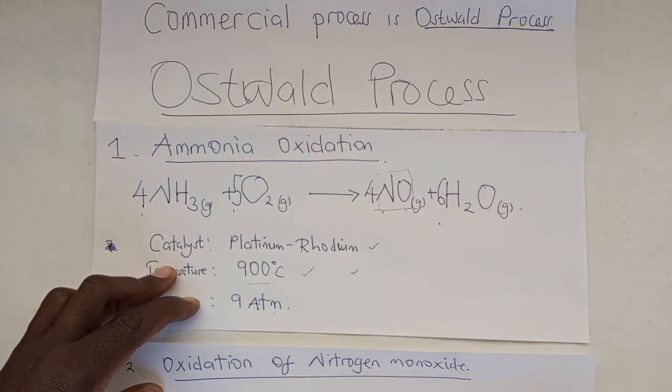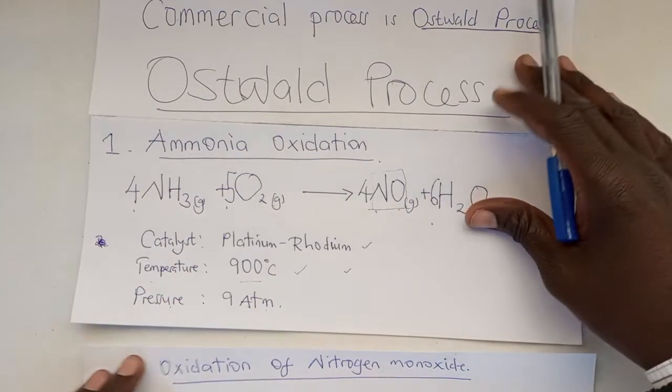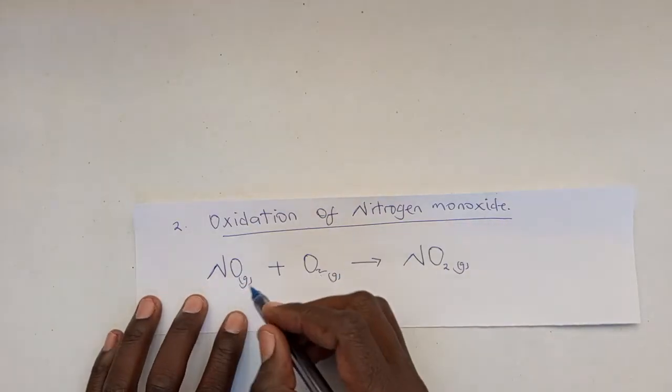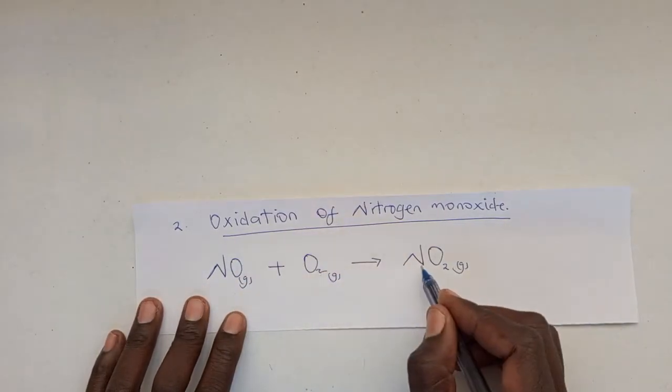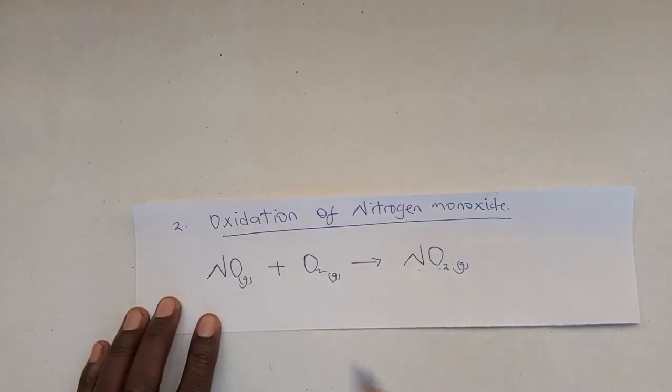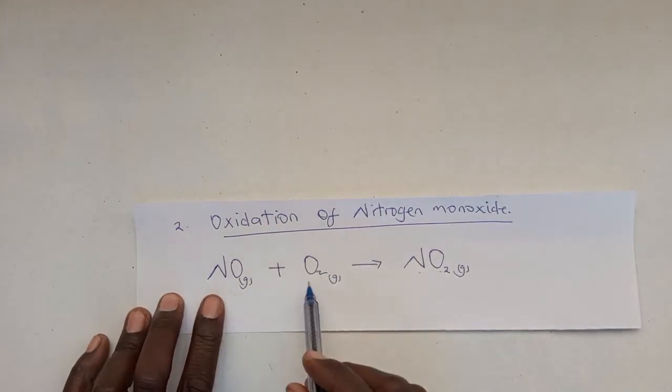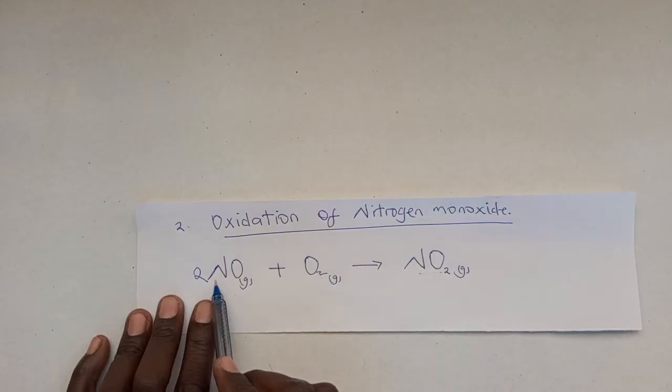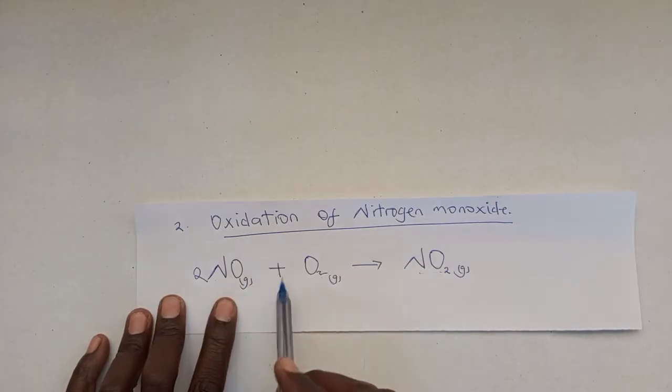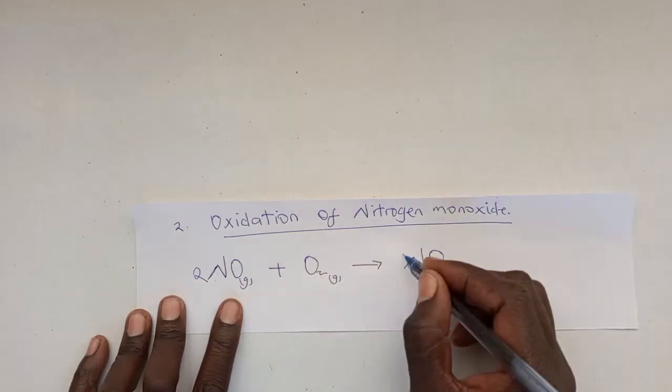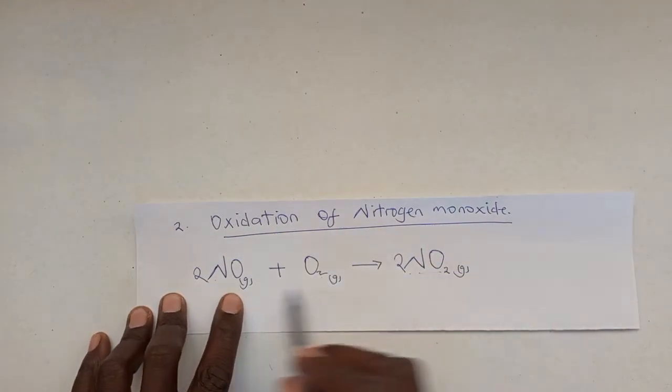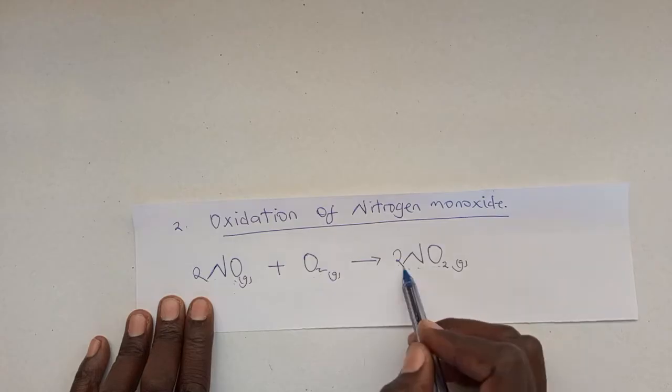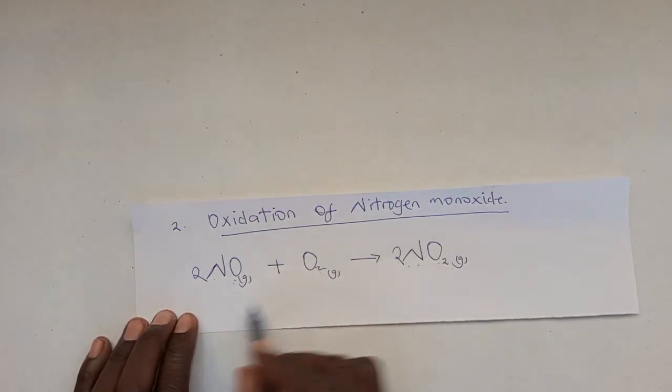In the second step, we have oxidation of nitrogen monoxide to give us nitrogen dioxide. When we balance this equation, you realize we have three oxygen atoms on this side, two oxygen atoms, one nitrogen. If we start with a 2, we have two nitrogen atoms, four oxygen atoms. This tells us to add a 2 here, giving us: 2NO(g) + O2(g) → 2NO2(g).